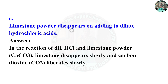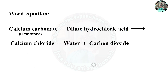Limestone powder disappears on adding to dilute hydrochloric acid. In the reaction of dilute HCl and limestone powder CaCO₃, limestone disappears slowly and carbon dioxide CO₂ is liberated slowly. Equation: calcium carbonate + dilute hydrochloric acid → calcium chloride + water + carbon dioxide.